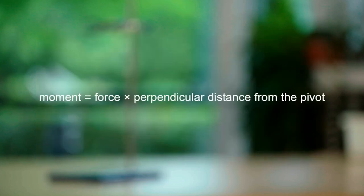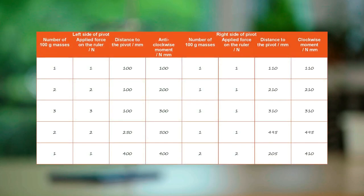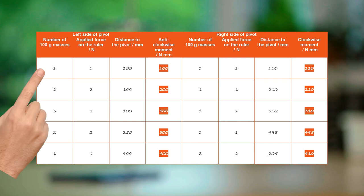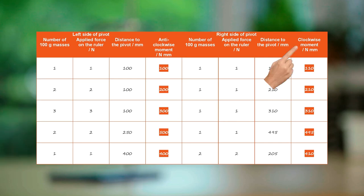Remember the moment equals the force times the perpendicular distance from the pivot. From the results in the table, the anti-clockwise and clockwise moments can be calculated using the values in the data table. The values of the clockwise and anti-clockwise moments are almost equal to each other for each balanced meter rule. This is an example of the principle of moments in action. If the sum of clockwise moments is equal to the sum of anti-clockwise moments, the object is in rotational equilibrium.